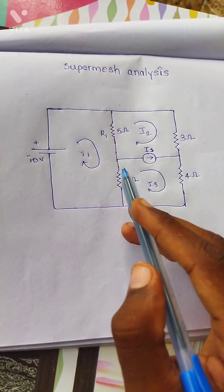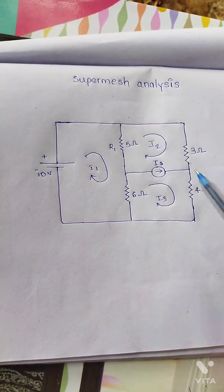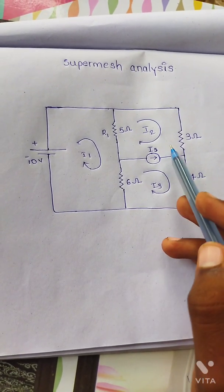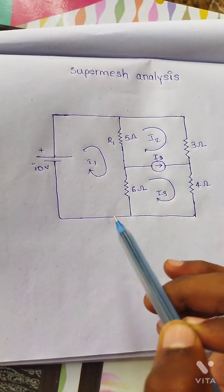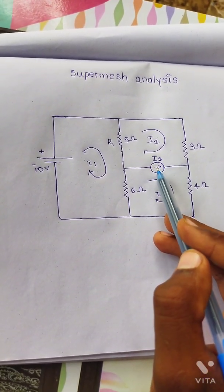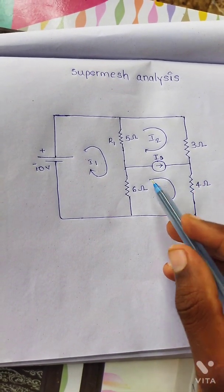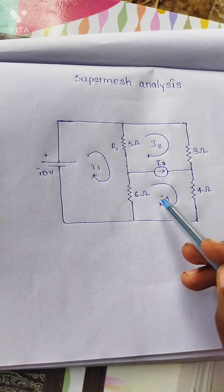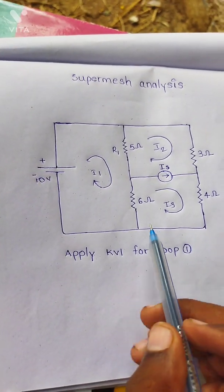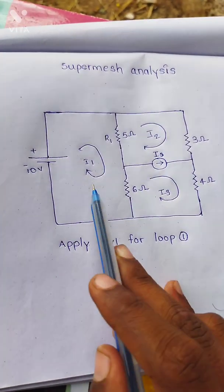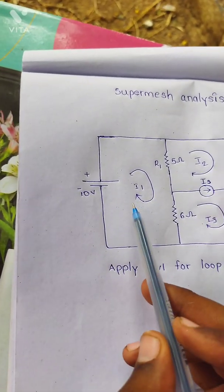We have to consider two loops of the circuit that share a current source. Because these two loops share a current source between them, we cannot apply KVL independently to each loop. The I2 current flows through the second loop and I3 current flows through the third loop, with a current source between these two loops. So we use supermesh analysis to solve them together.